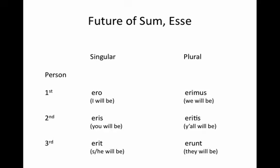With meanings: ero is 'I will be,' eris is 'you will be,' erit is 'he, she, or it will be,' erimus is 'we will be,' eritus is 'y'all will be,' and erunt is 'they will be.'